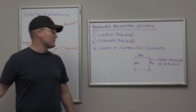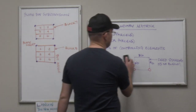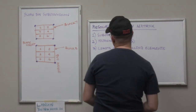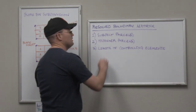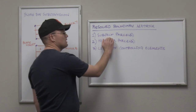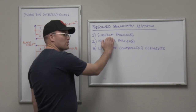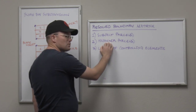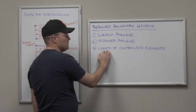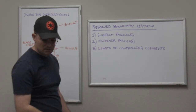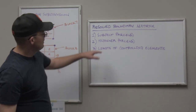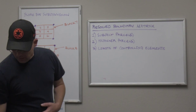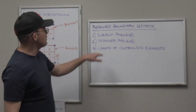Use your resolved boundary matrix. Figure out what you actually have to put on the ground. This will make more sense with some examples. What you need to do is look at your subject parcel, your adjoining parcels, and then the limits of the controlling elements.